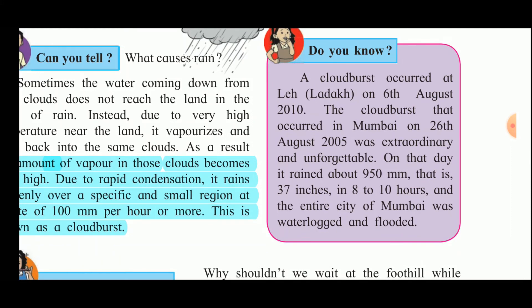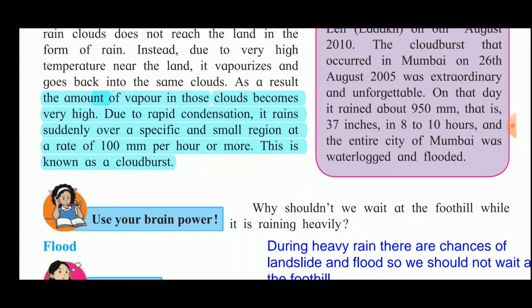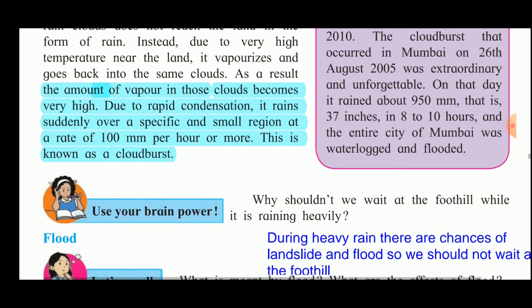One example is the cloud burst that occurred in Leh on 6th August 2010. The cloud burst in Mumbai on 26th August 2005 was extraordinary — on that day it rained about 250 millimeters (37 inches) in 8 to 10 hours and the entire city was waterlogged and flooded. Since then, people in Mumbai have become very aware; schools and offices are shut down and school children are sent home as soon as it starts raining heavily.